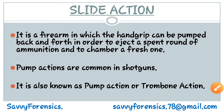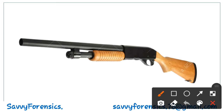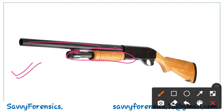Now we will see the image. Here you can see an image of a shotgun on which slide action is used. If we talk about this image, this is the barrel. Below the barrel is the grip. Here you can see the slider present, which is attached to your barrel.